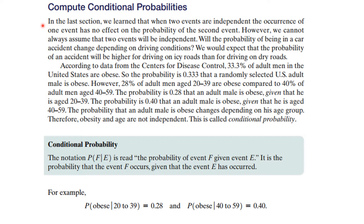In a previous lecture, we learned that when two events are independent, the occurrence of one event has no effect on the probability of the second event. However, we cannot always assume that two events will be independent. Will the probability of being in a car accident change depending on the driving conditions? We would expect that the probability of an accident would be higher if you're driving on icy roads rather than driving on dry roads.